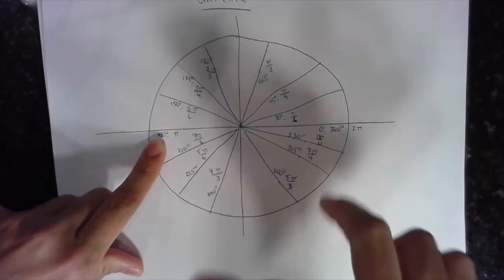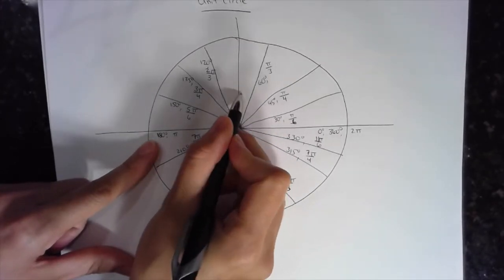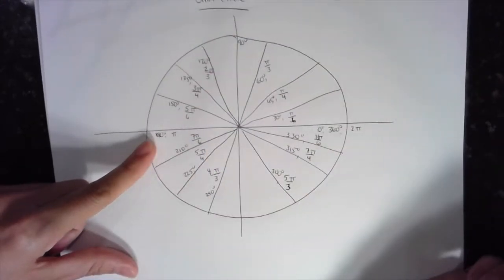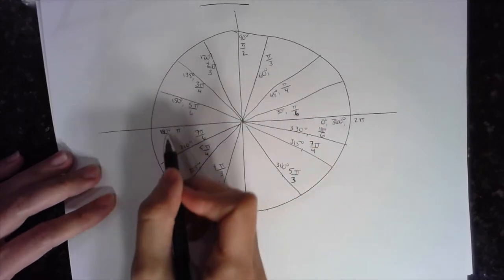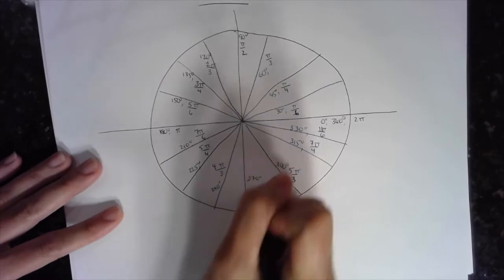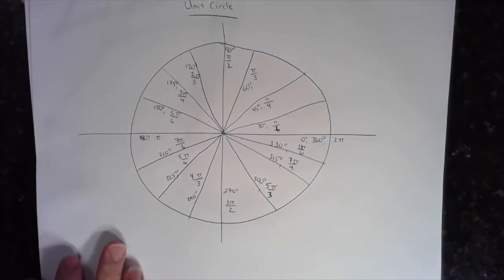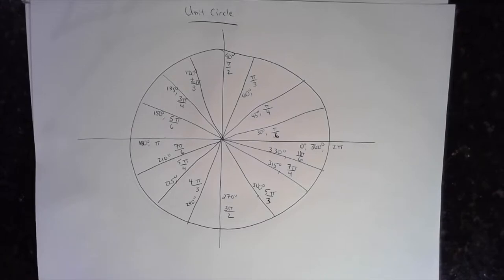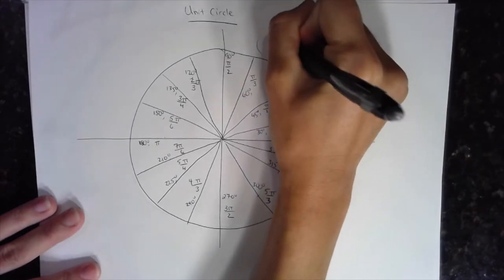The angles on the axes are the remaining ones. One-fourth of a full circle is 90° or π/2 radians. Three-fourths of a full circle is 270°, or 3π/2 radians. And that covers all angles in the unit circle. I always suggest creating the unit circle at least five times — you'll start seeing the same numbers over and over and it will help you memorize it.